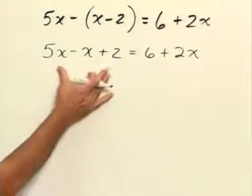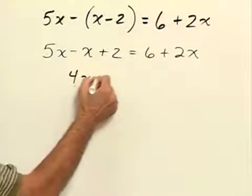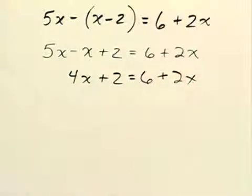Now we'll combine like terms on the left side of the equal sign here. So 5x minus x is 4x plus 2 equals 6 plus 2x. So we combine like terms.